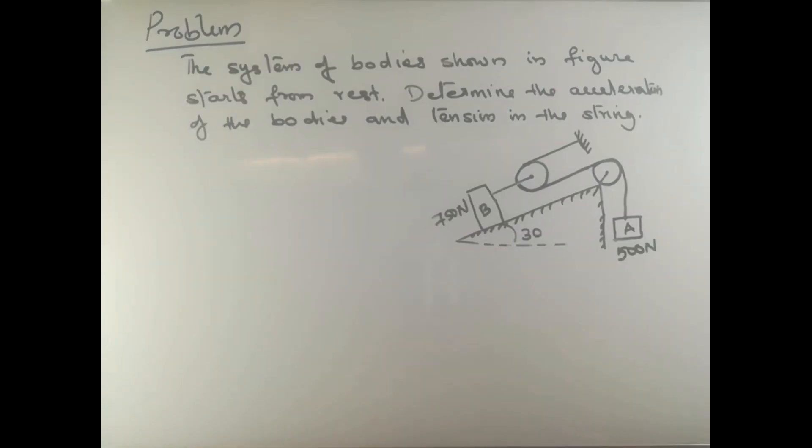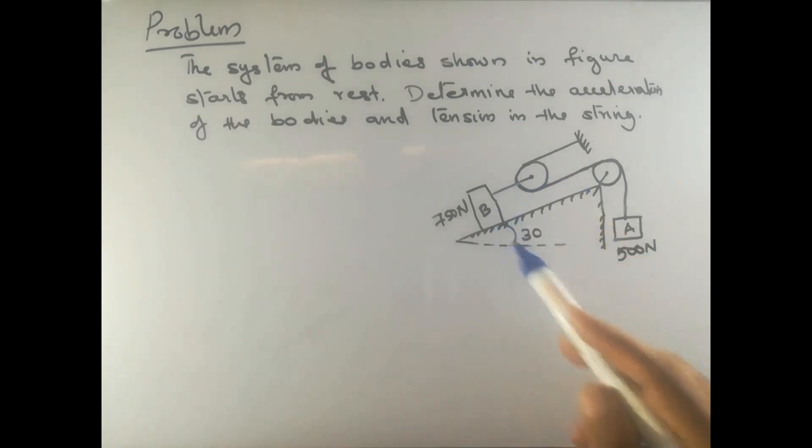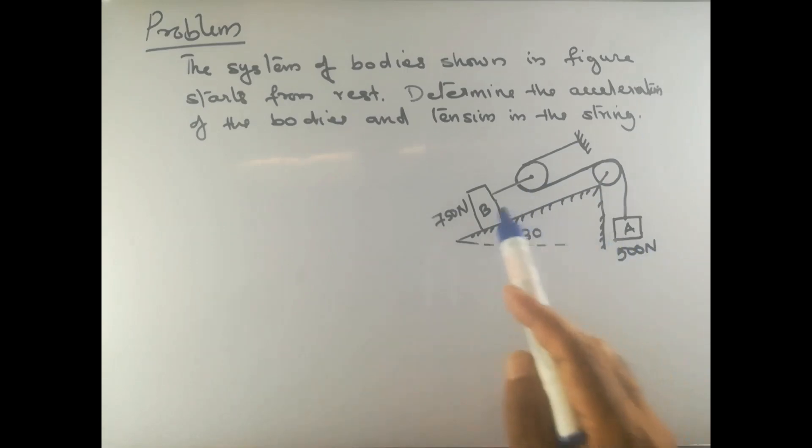Today we will see an example problem of kinetics in which an inclined plane and two pulleys are involved. The system of bodies shown in the figure starts from rest. We need to determine the acceleration of the bodies and the tension in the string.